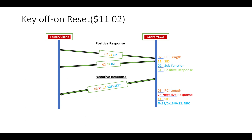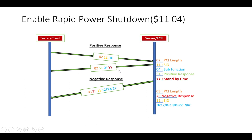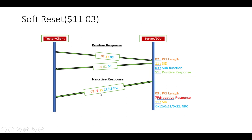The request format for key off/on reset is: 0x02 (PCI), 0x11 (service ID), 0x02 (sub-function ID). For a positive response: 0x02 (PCI), 0x51, followed by 0x02. For a negative response: 0x03 (PCI length), 0x7F (negative response ID), 0x11 (service ID), followed by the NRC — 0x12, 0x13, 0x22, or 0x33.